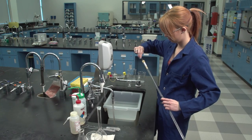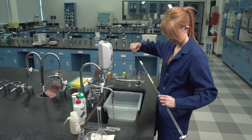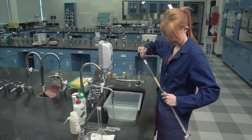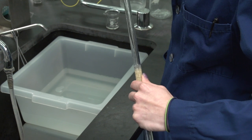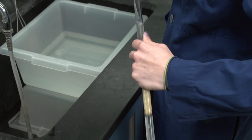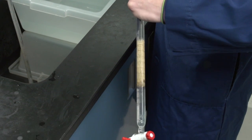Volumetric glassware such as pipettes, burettes, and volumetric flasks should not be scrubbed with ordinary brushes as they tend to scratch the glass and can change the calibration. Special brushes are available for this purpose.